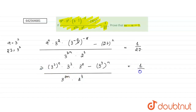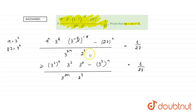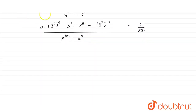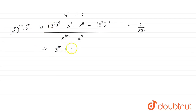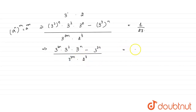This is equals to 1 by 27. Now, 1 by 27 can also be written as 3 to the power minus 3, because anything in the denominator — like 1 by a to the power n — is written as a to the power negative n in the numerator. So 27 equals 3 cubed, making 1 by 27 equal to 3 to the power minus 3.